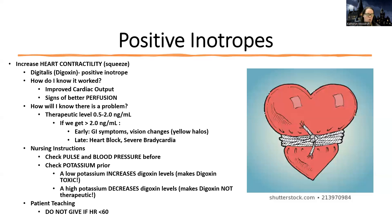Digoxin can be used in a lot of different ways. It can be used for heart failure as a positive inotrope — the heart squeeze — and in atrial fibrillation as a negative chronotrope and dromotrope, which decreases heart rate and decreases electrical activity. When I've given digoxin in the last year, it's always been for AFib — maybe once for heart failure, but usually it's for AFib.